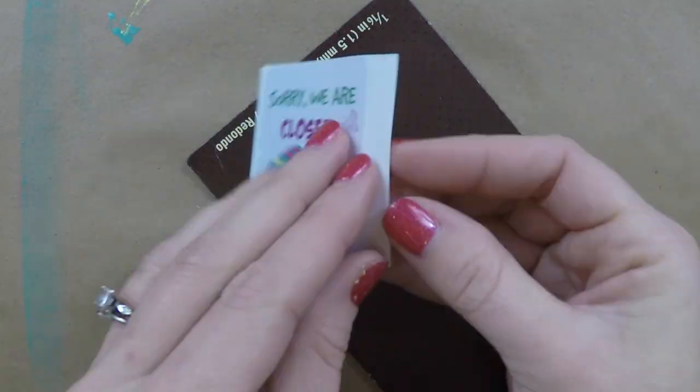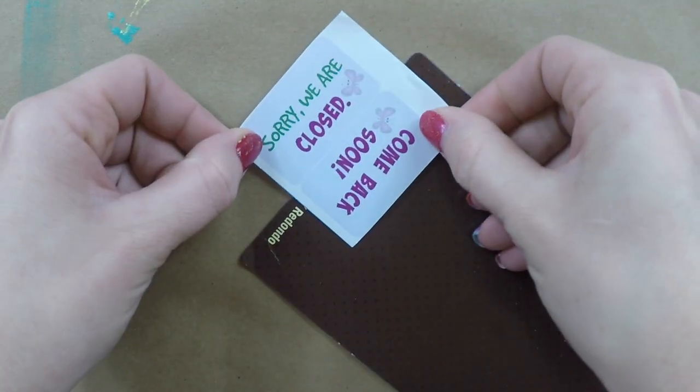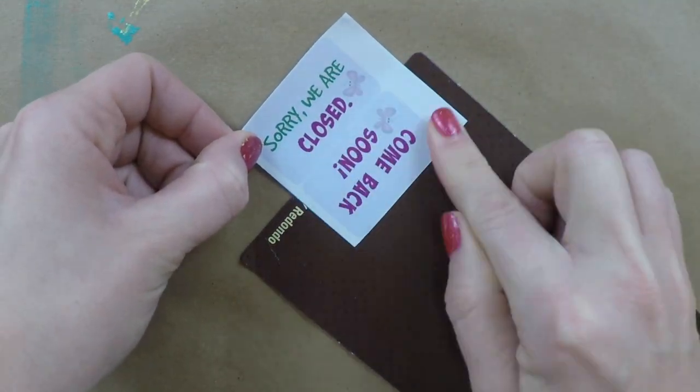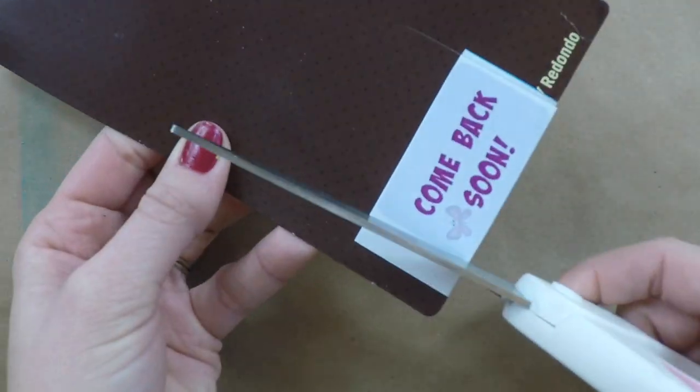For the come back soon sign, I'm going to take it off the sticker paper, and I'm going to place it on the edge of a recycled paper board, and then fold it over. Now I can cut it out, and I have a front and a back.